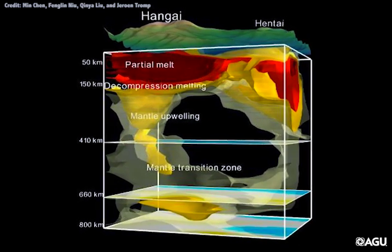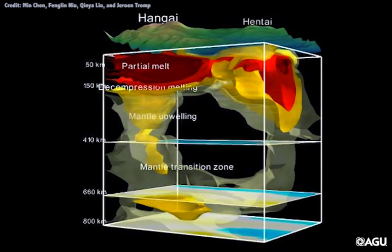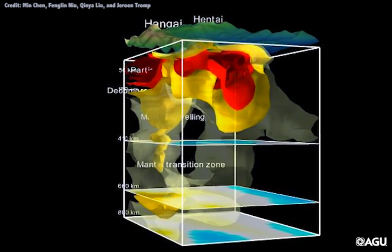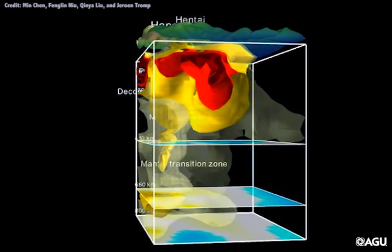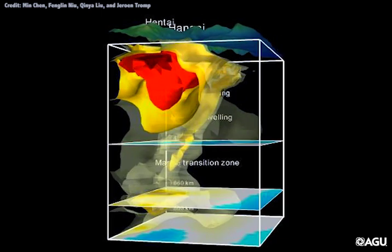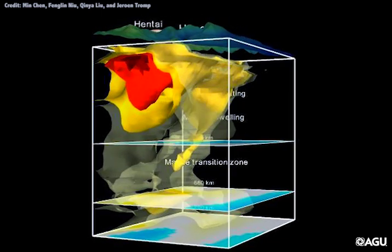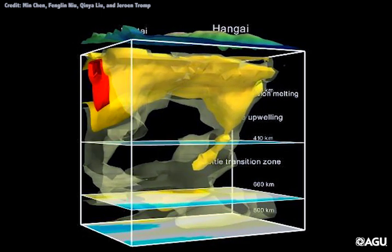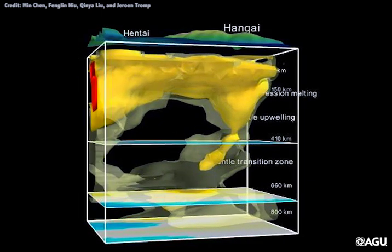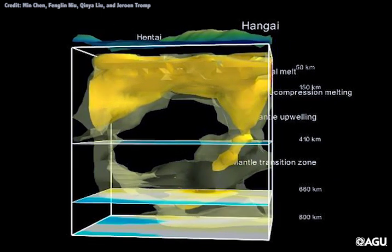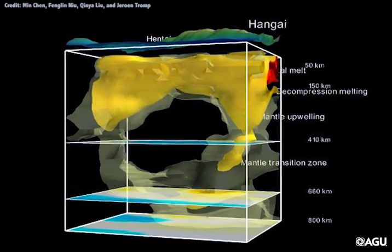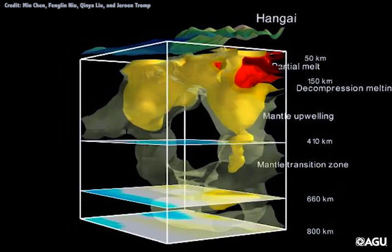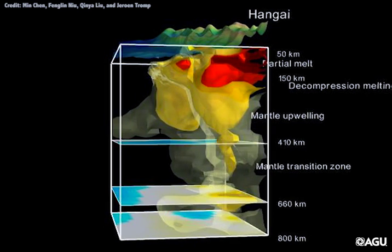This 3D image shows the Earth under the Hangai Dome in central Mongolia. Colored yellow, warm rock rises up from the deep mantle toward the Earth's surface. The pressure on the rock drops as it rises. When the rock reaches 150 km below the surface, it starts to melt and form magma, illustrated in red.